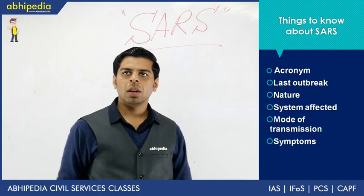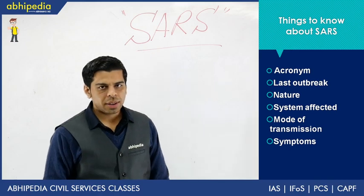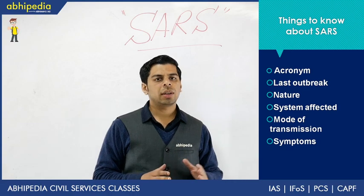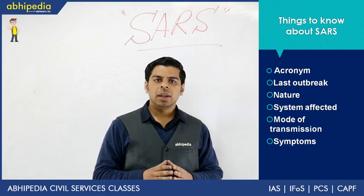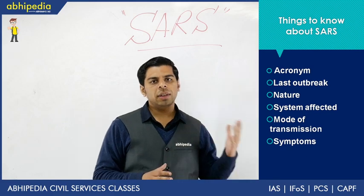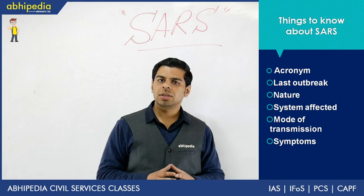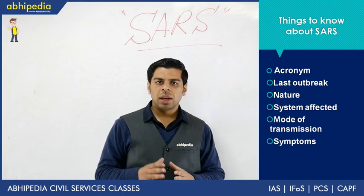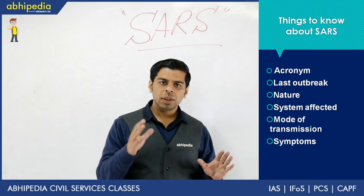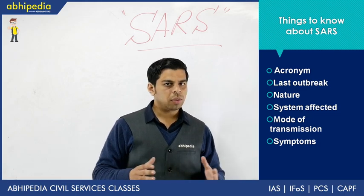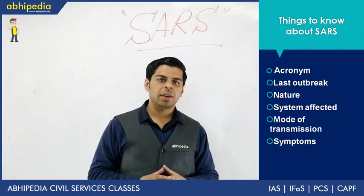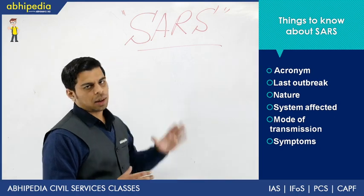When covering any disease, there are key themes to address: the causative agent, the nomenclature and whether it's an acronym, the mode of transmission, symptoms, and whether any vaccinations or treatments are available. These are the themes on which UPSC generally frames its prelims questions, and I'll be discussing each one by one.